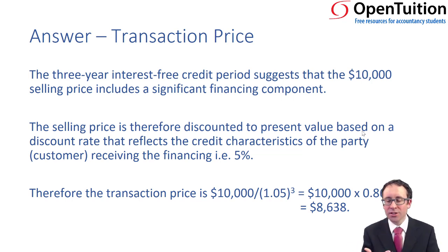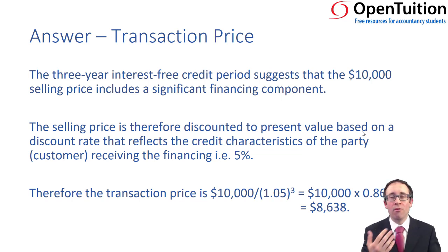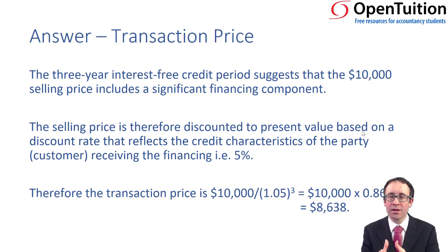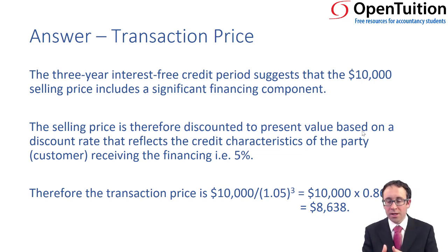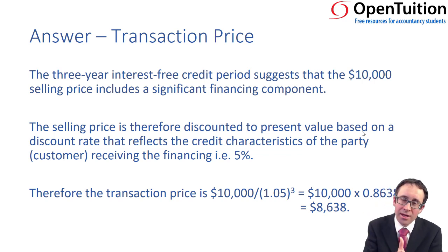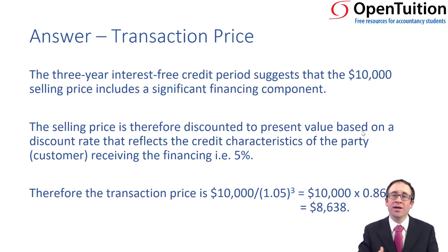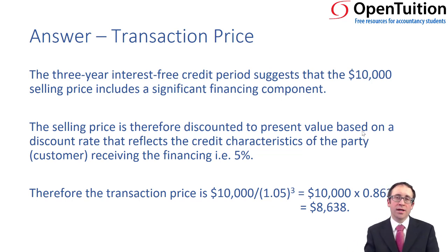What we've got is a transaction price of $8,638 on the car, and the difference between that and the $10,000 is the interest income. The transaction price on the car will be recognized immediately, but the interest income will be recognized over the life of the contract using an amortized cost methodology.